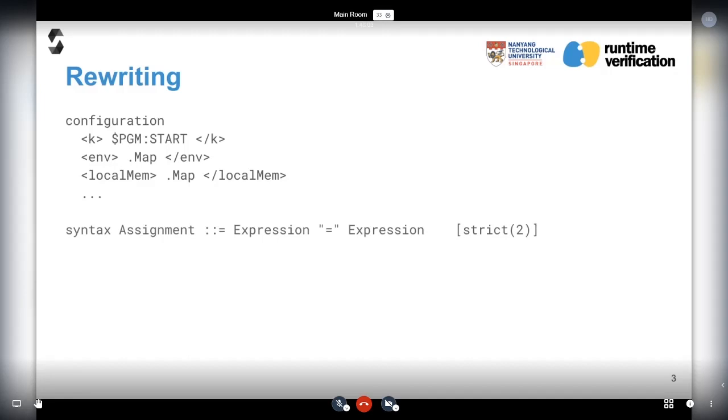Here we come to syntax. You write your syntax in typical EBNF form, but we have these handy annotations. For example, strict 2 means that the second argument is strict, so the right-hand side would be evaluated first. You can add some semantic meaning to your syntax declarations.